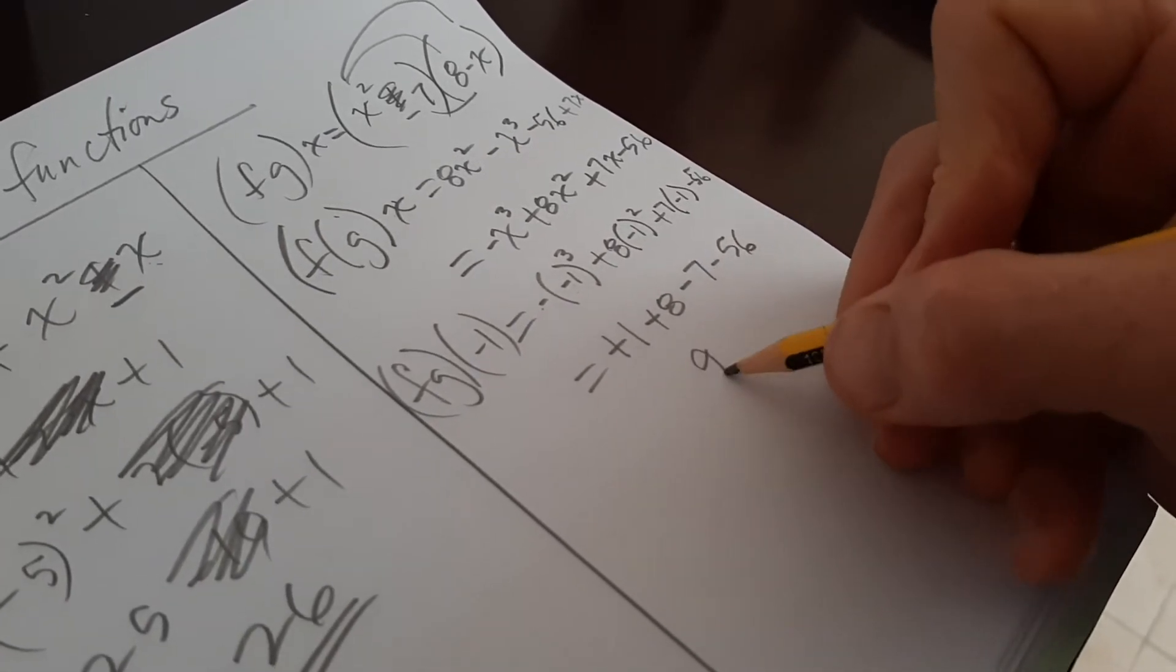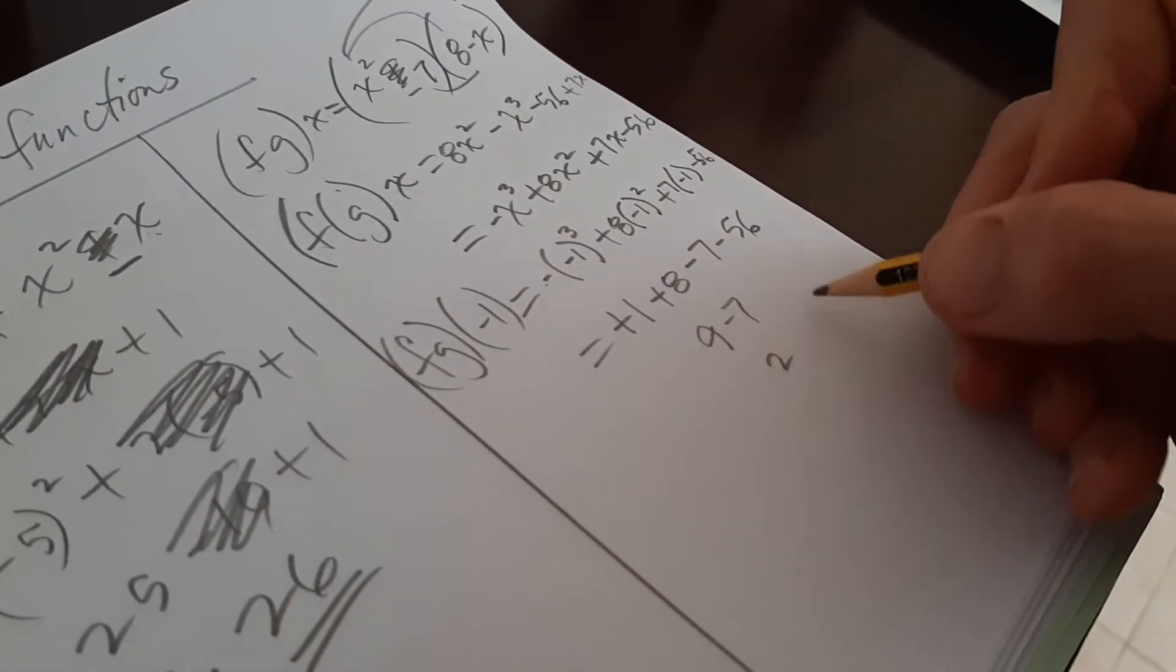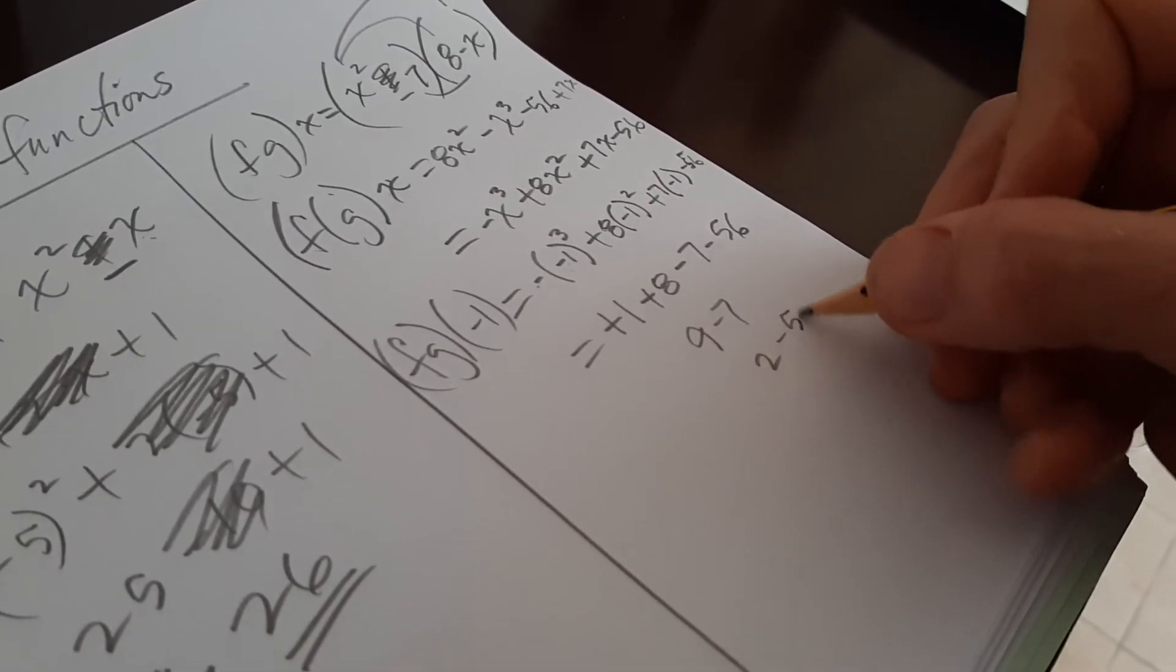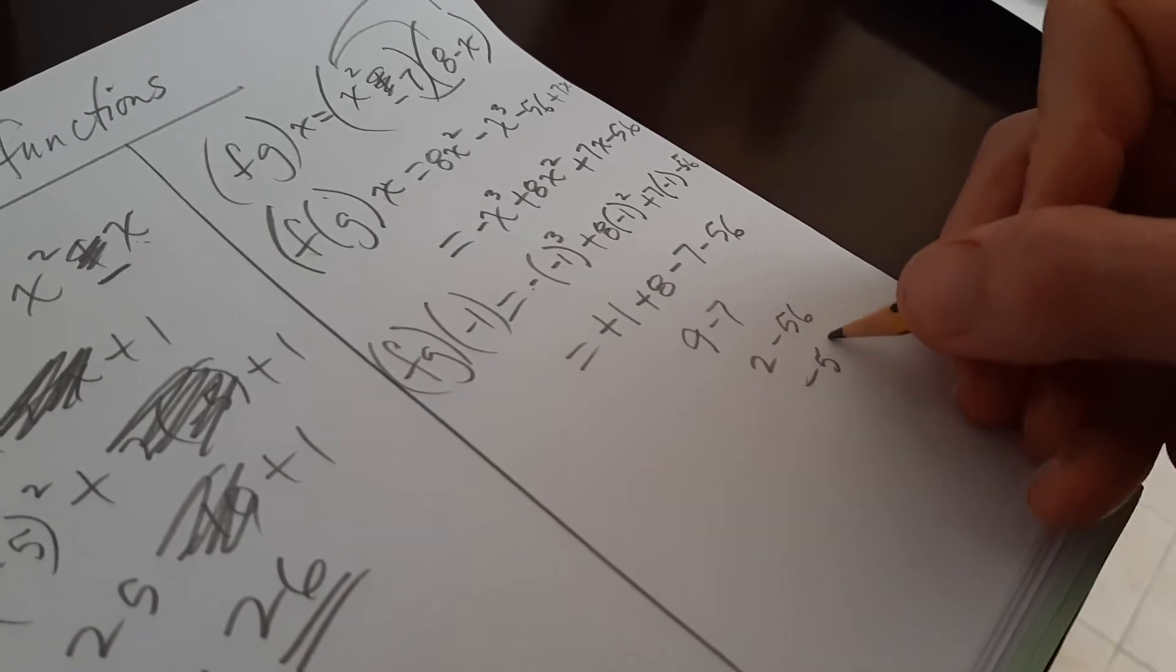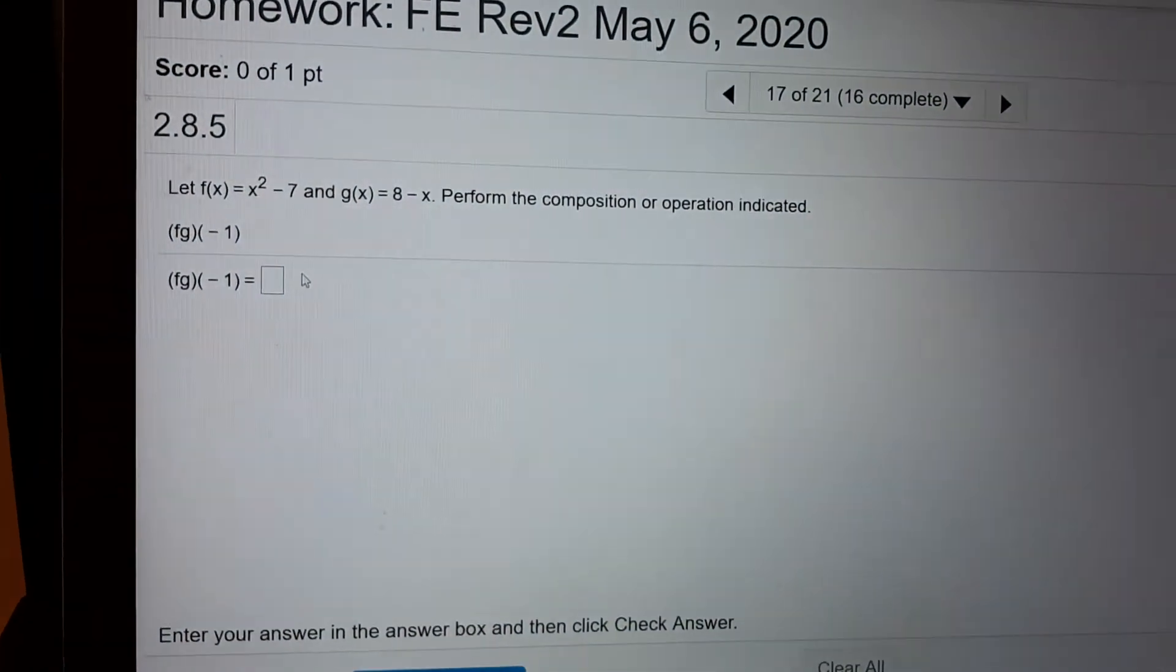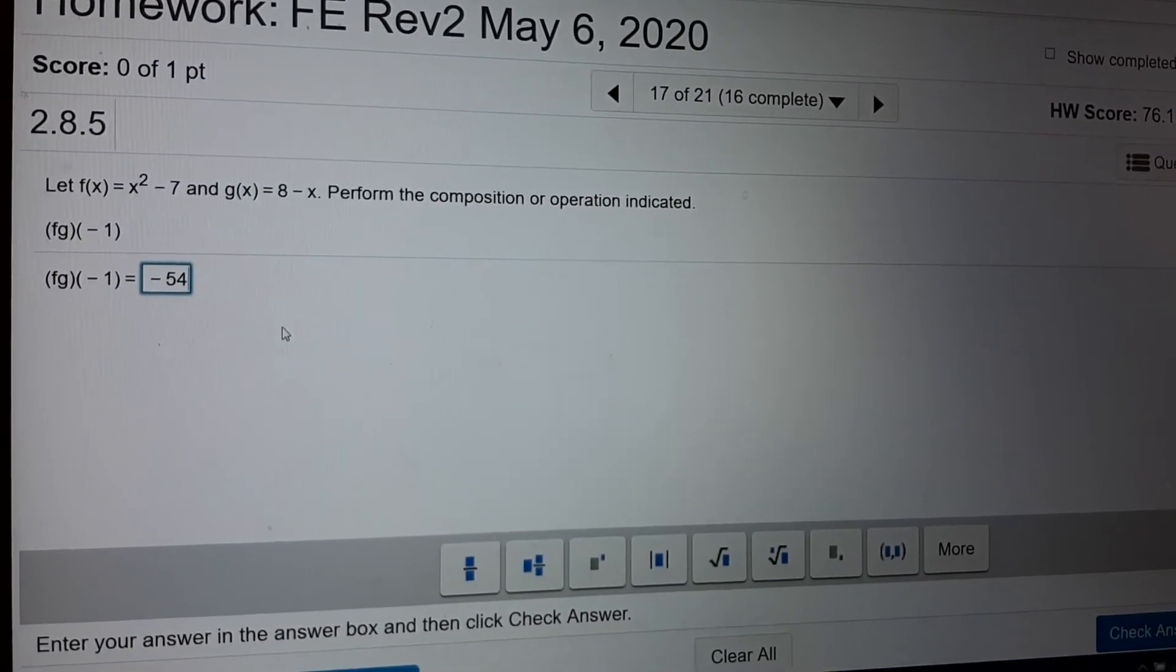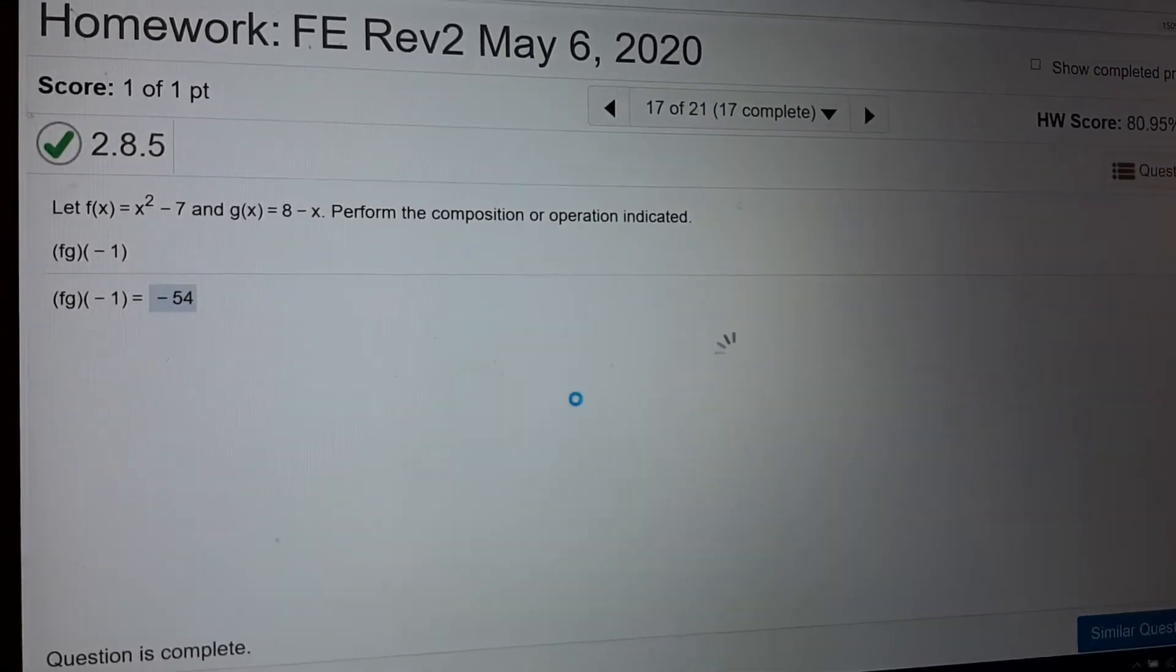Boom. So I'm going to have 9, I'm going to have minus 7 is 2, minus 56, minus 54. I hope I did all my math right. I hope you followed all that. And I lied. I guess this is going to get long because I worked these each out. Yay, I got that one correct. One more.